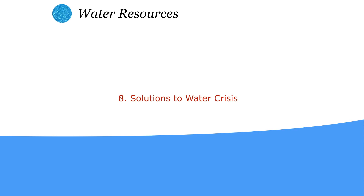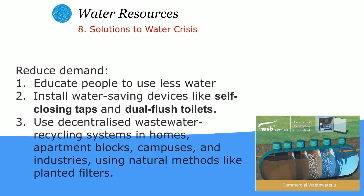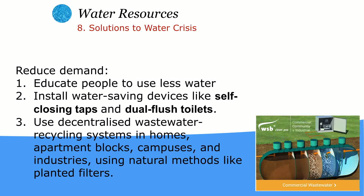Solutions to the water crisis include educating people to use less water, installing water-saving devices like self-closing taps and dual-flush toilets, using decentralized wastewater recycling systems in homes, apartments, campuses, and industries, and using natural methods like planted filters.